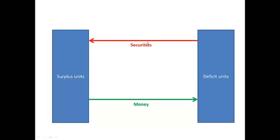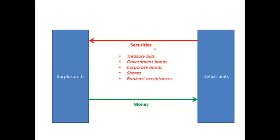These securities would all involve some kind of promise of compensation that would be paid at some stage in the future. Securities can include treasury bills, government bonds, corporate bonds, shares, and bankers acceptances as examples.